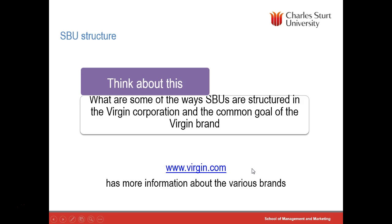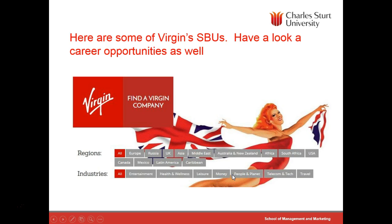Think about what some of the strategies are and what SBUs are structured in the Virgin Corporation under the common Virgin brand. There are reportedly something like 200 different companies operating across a range of markets. In this kind of business, a decision needs to be made over which areas they're going to expand in, which areas they're going to harvest from, and which areas they might not want to be in at all.